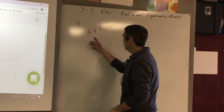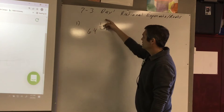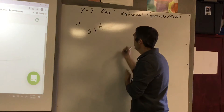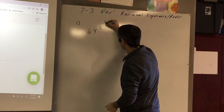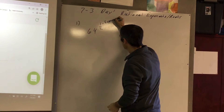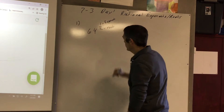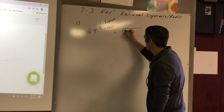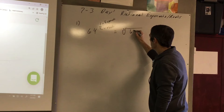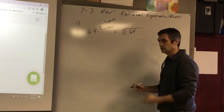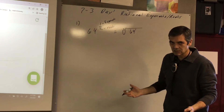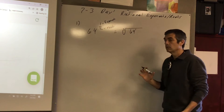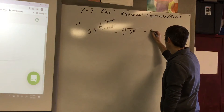So 64 raised to the one-half. When you set this up, remember: the 1 is your exponent and the 2 is your root. So you have the square root of 64 to the first power. Well, 64 to the first power is still just 64. All this is saying is take the square root of 64, and the square root of 64 is 8.